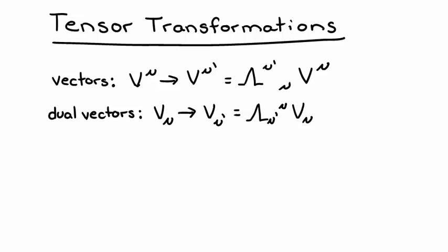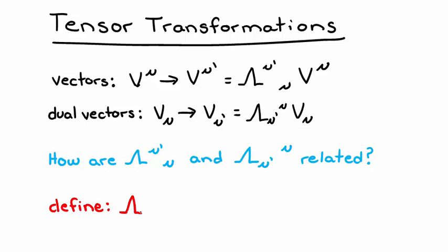The next question we must ask is, how are lambda lower mu prime upper mu and lambda upper mu prime lower mu related? Let's start by first defining this lambda upper mu prime lower mu, the transformation used for vectors, as the matrix lambda.